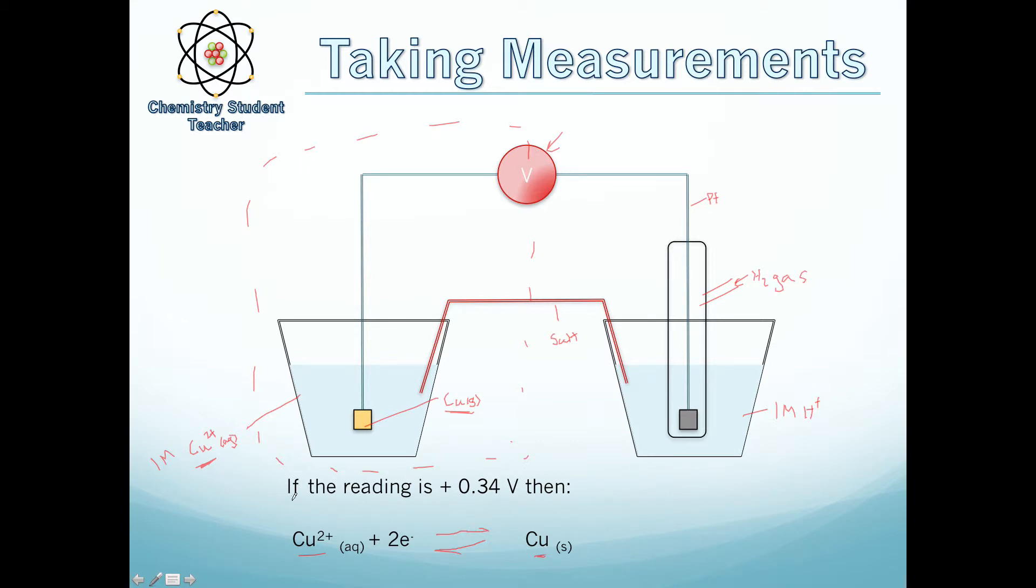For example, if the reading is plus 0.34 volts, that means the standard electrode potential of this half cell is plus 0.34 volts. And this is a key point when we're setting up cells, which I'm now about to go on to, because we need to know what's giving out the electrons and what's taking the electrons.